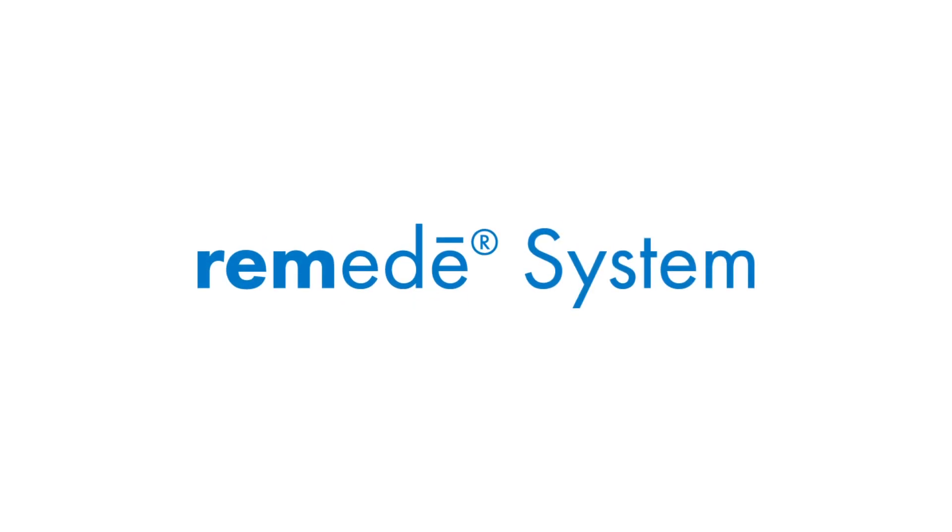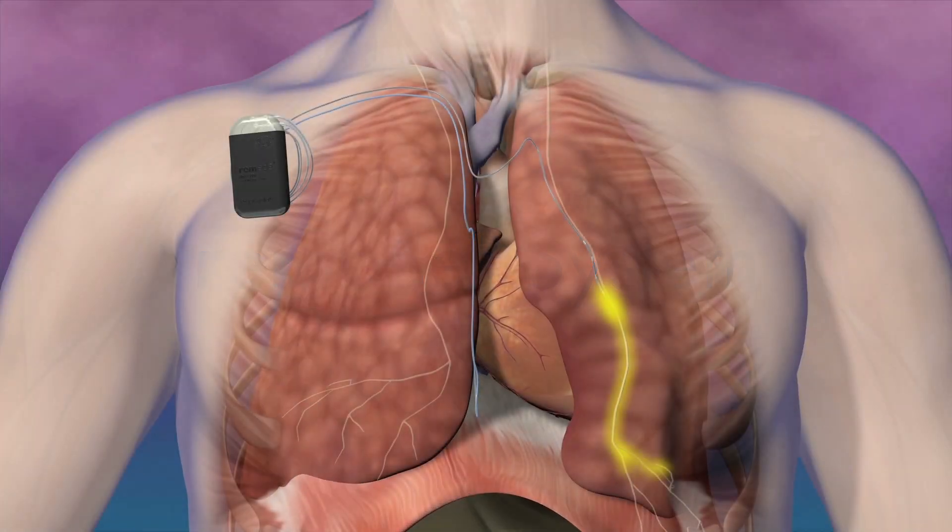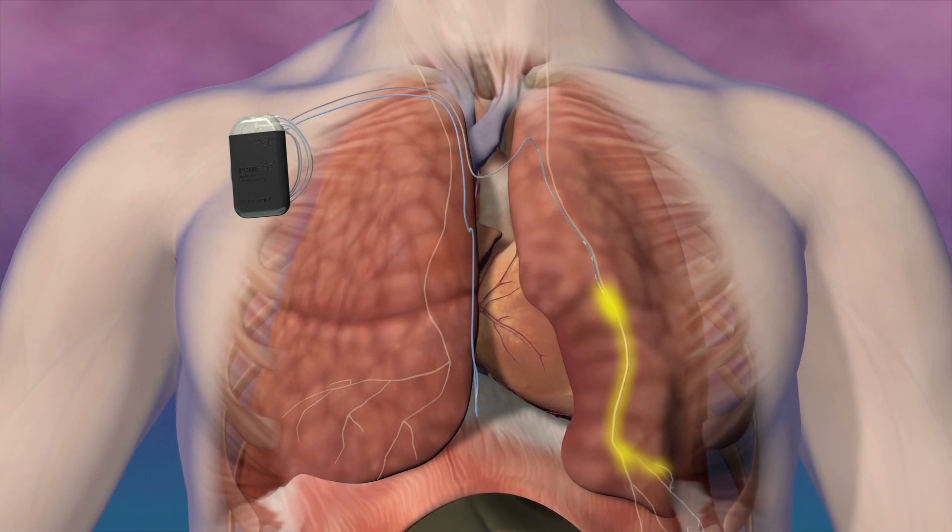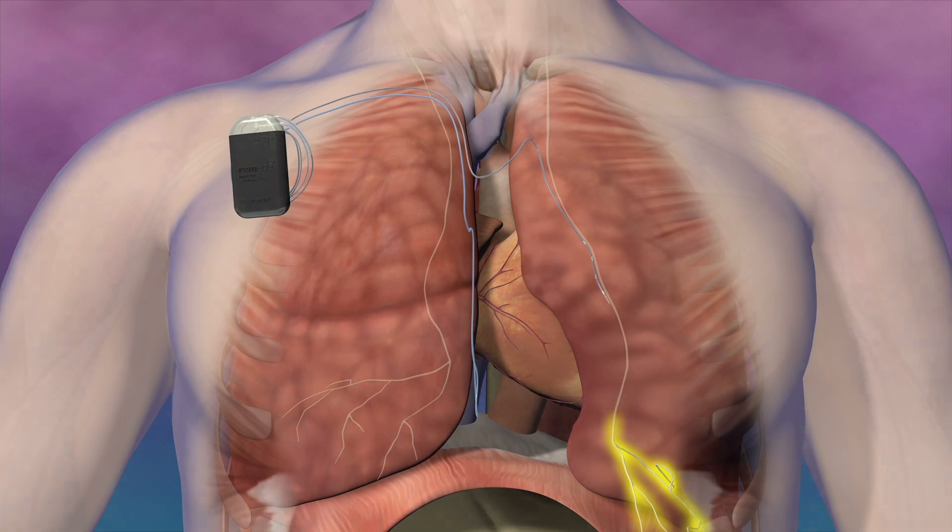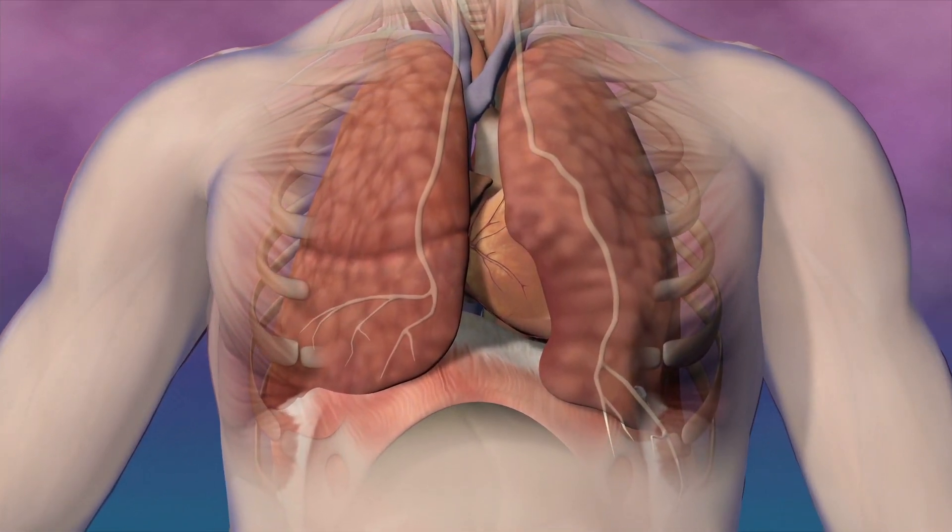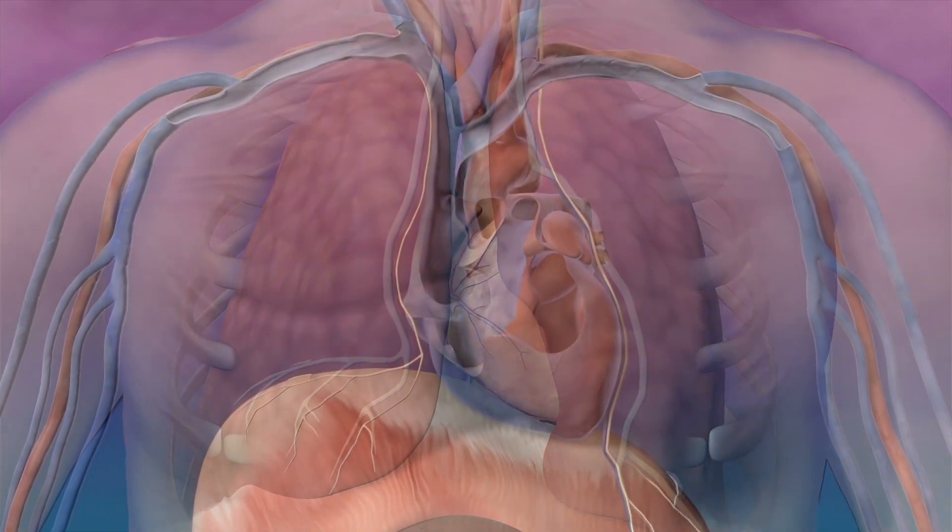Welcome. This video describes the implant procedure for the Remedy System using a left respostim lead. The Remedy System is an implantable phrenic nerve stimulator indicated for the treatment of moderate to severe central sleep apnea, or CSA, in adult patients.